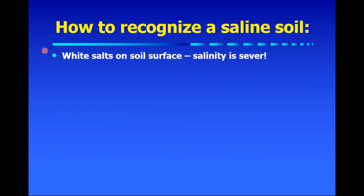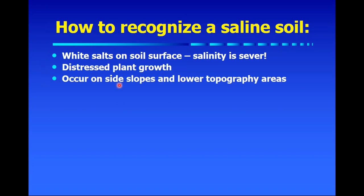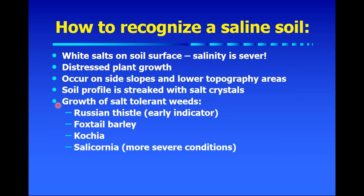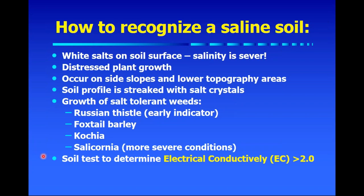How do we actually recognize a saline soil? When it's severe it's fairly easy with the white salts on the surface, but before it gets to that state, you might notice that plant growth is distressed — typically more on side slopes and lower topographic areas. You might even see some salt crystals in old root channels or worm channels where salts have precipitated out of solution. Giveaways include growth of salt-tolerant weeds like Russian thistle, foxtail barley, or kochia. If you suspect salinity, the best way to check is to take soil samples from the worst area, the marginal area, and good areas and have them checked for electrical conductivity.